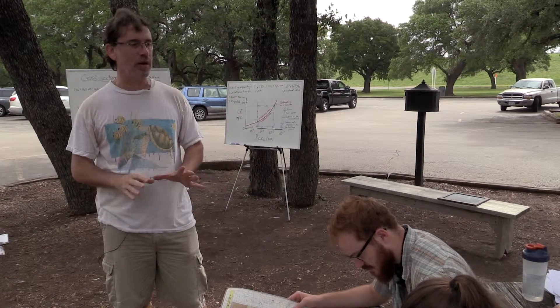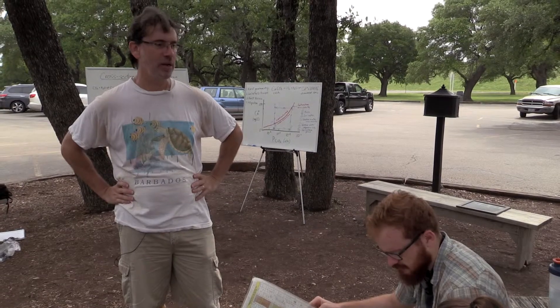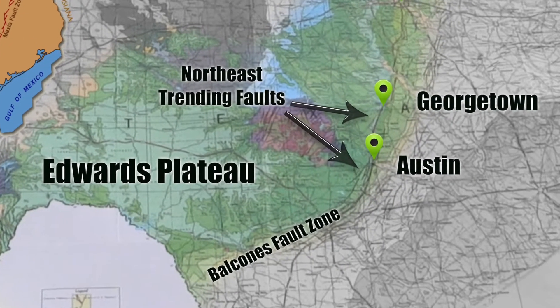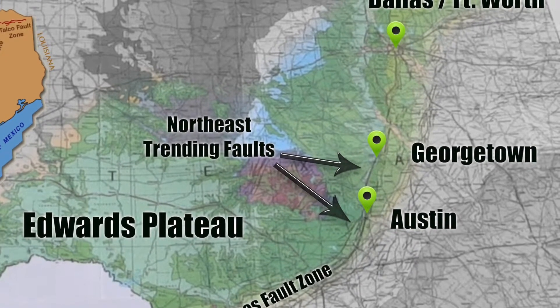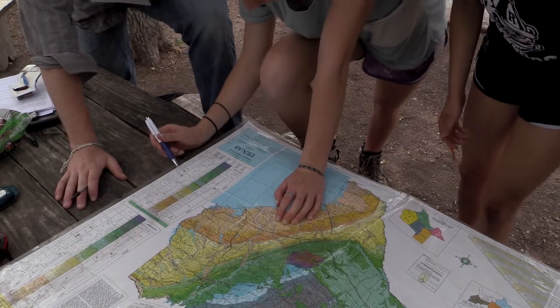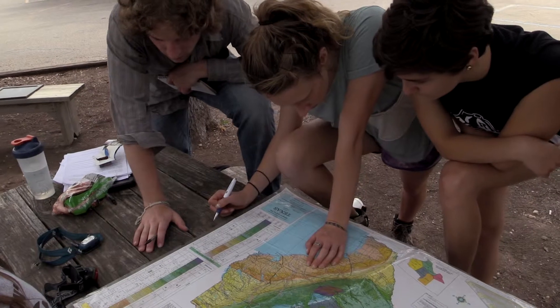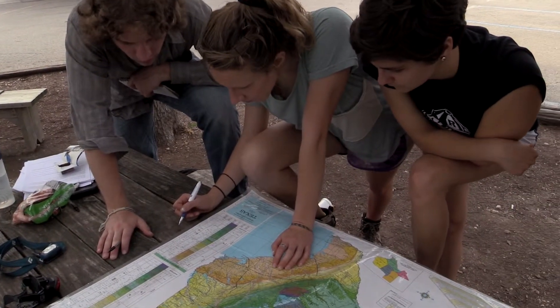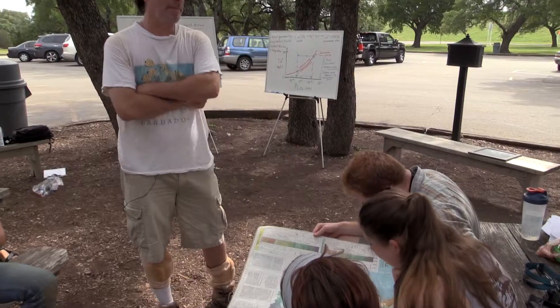With that geologic context established, we now want to figure out specifically where we are geographically and identify the most important geologic features. Find where we are on your map — you could start in Austin and know that you drove northeast about 30 miles to Georgetown. If we took a core right where we're sitting, we'd drill through an Anthropocene soil and pavement layer, then natural soil, and then hit limestone. That limestone would be from the Edwards Formation.